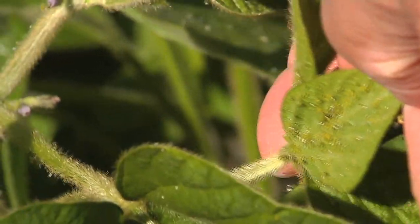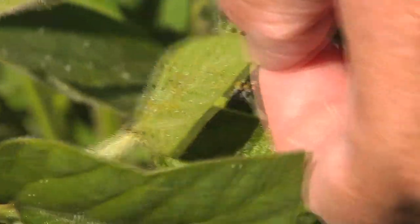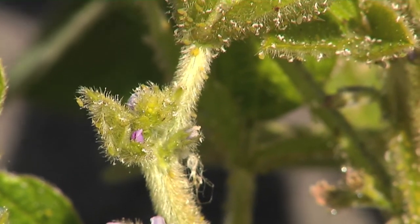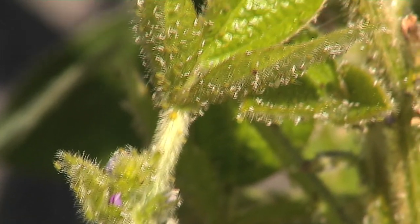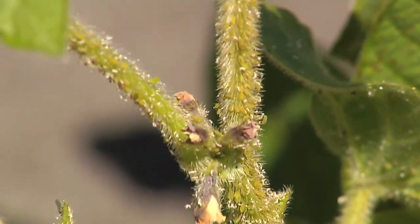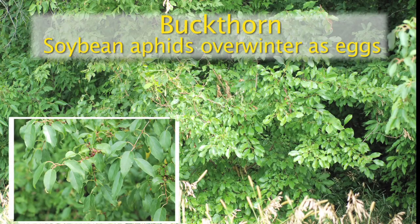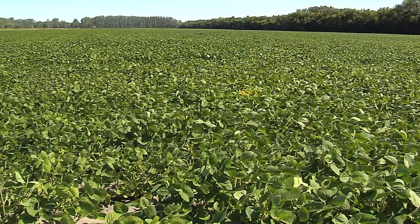Part of the reason is we have aphids that migrate up into North Dakota from the southern states, and also the population levels vary year to year within the state because the eggs overwinter on the buckthorn. It also has multiple generations — up to 15 or more per year — so the populations can fluctuate.